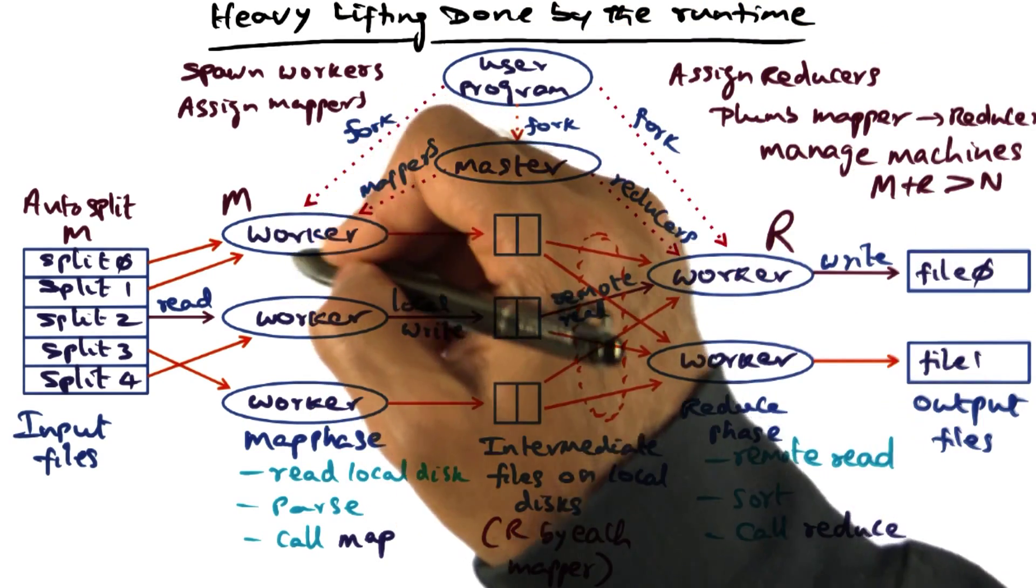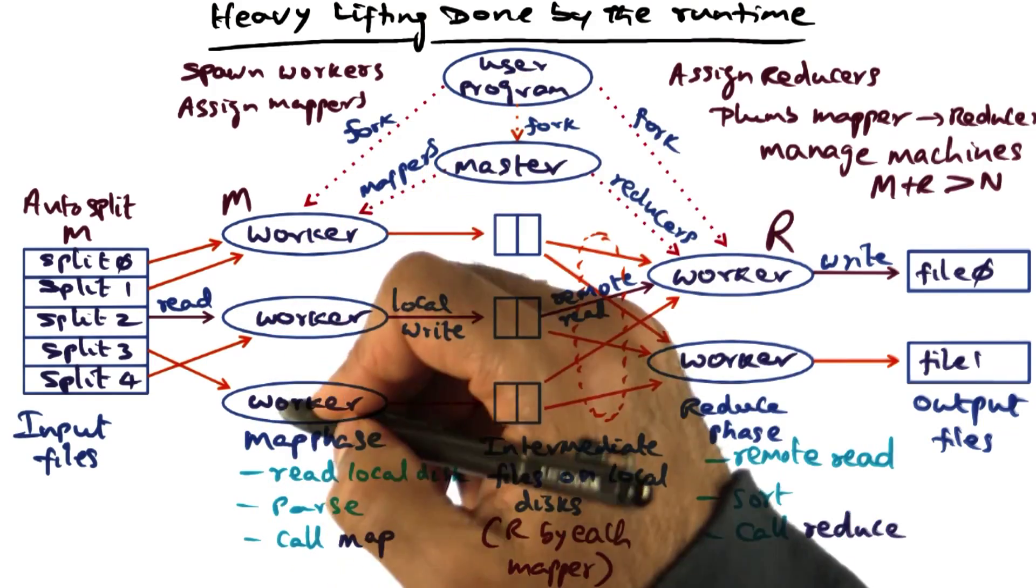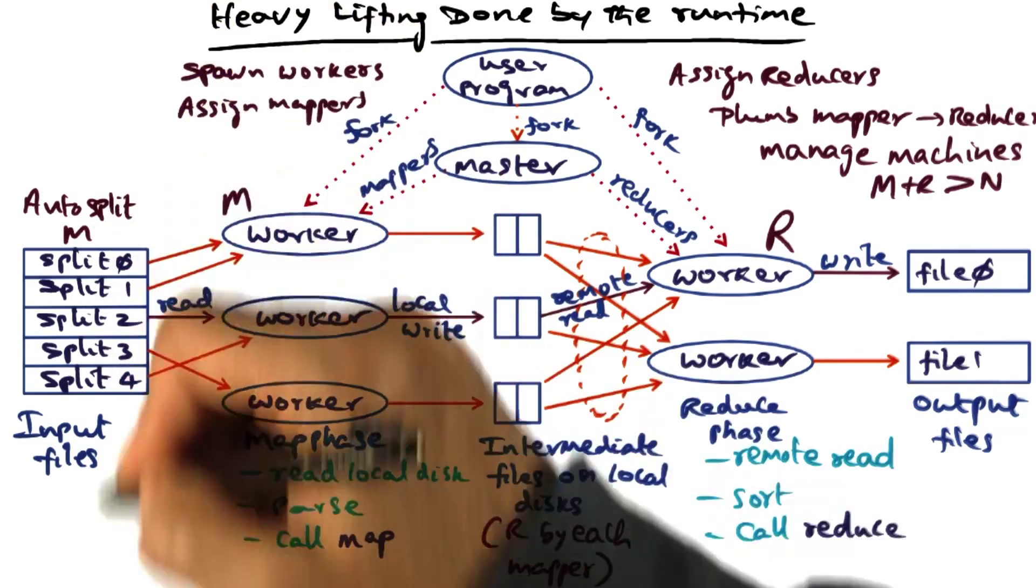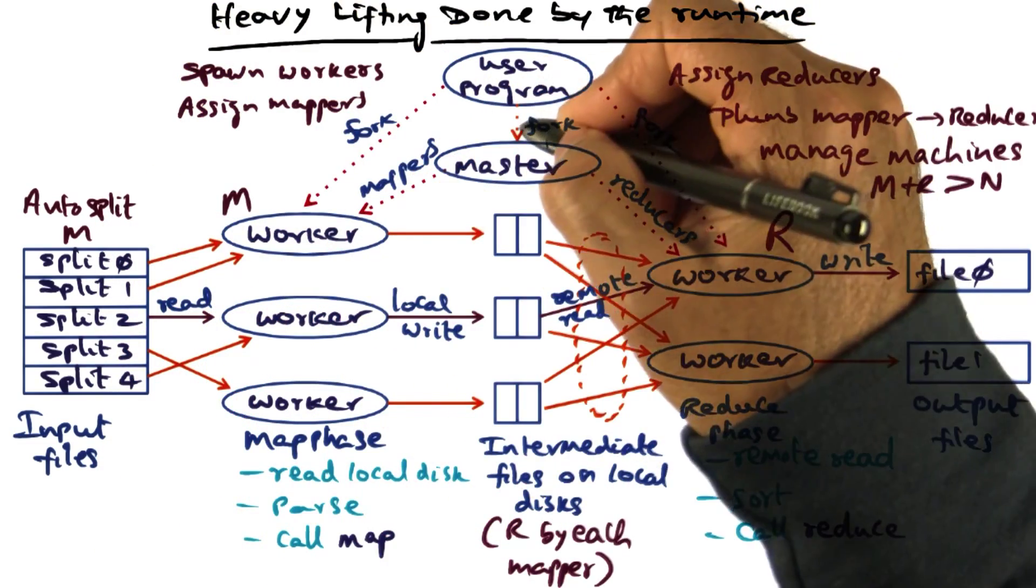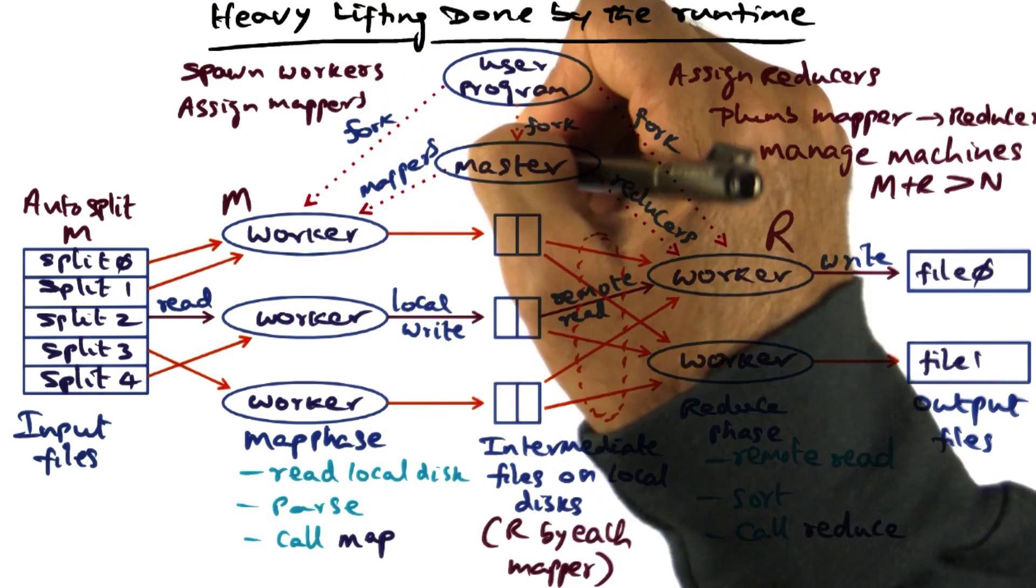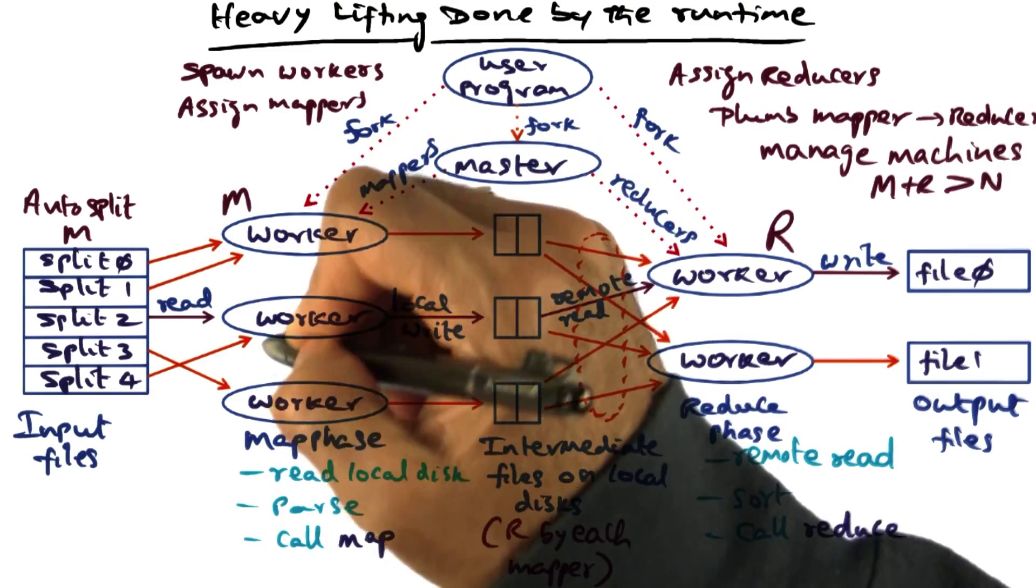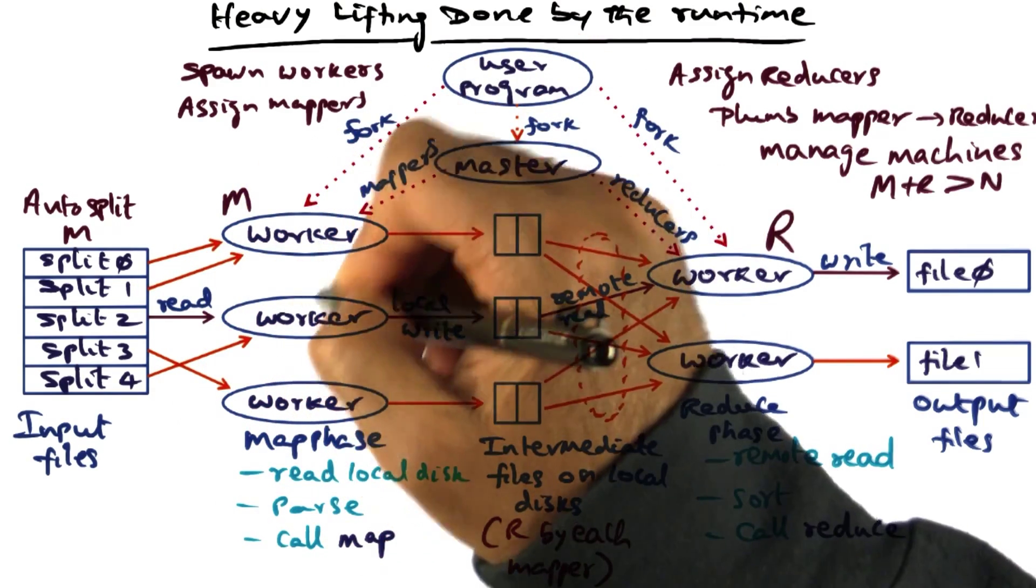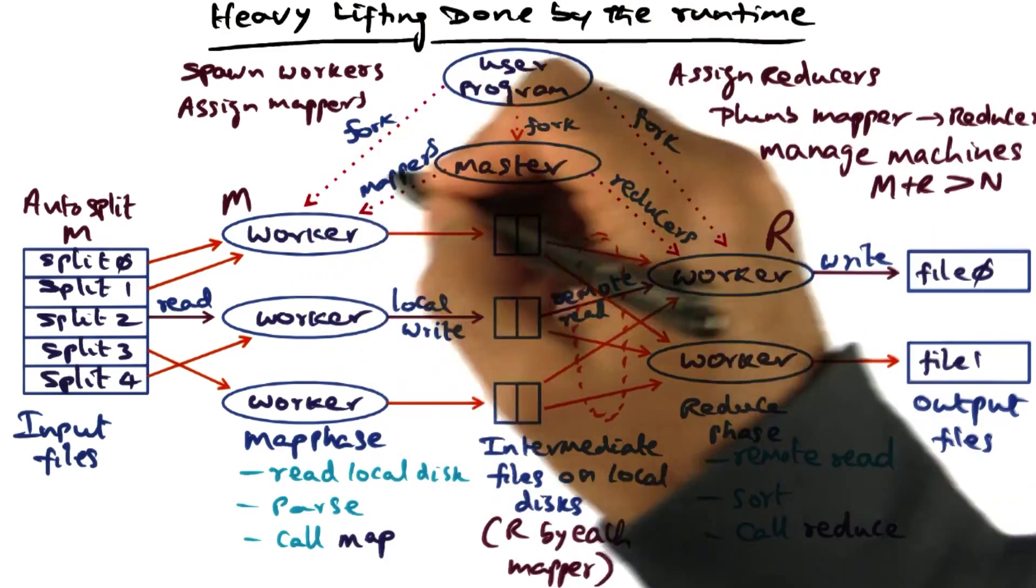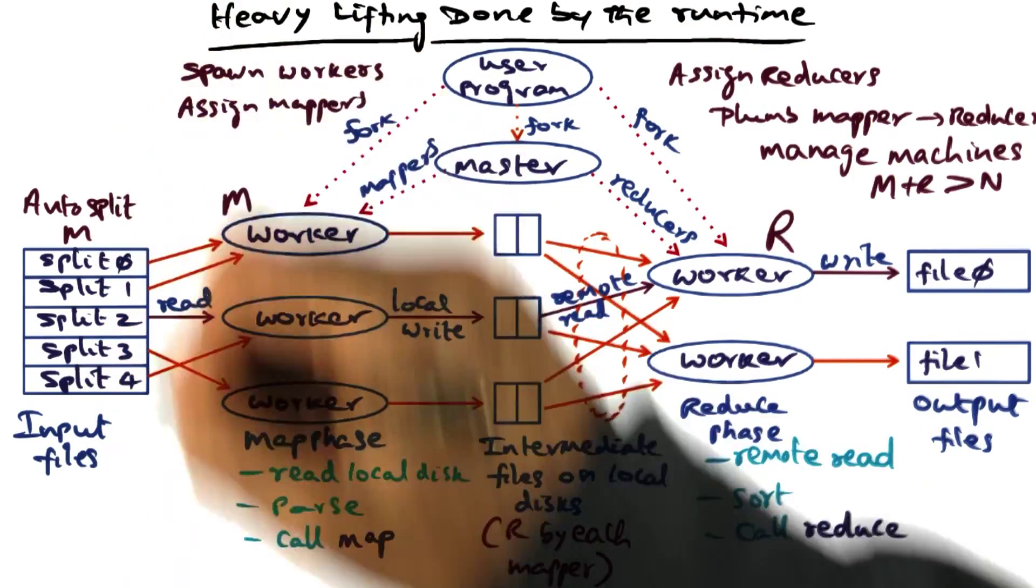So for instance, let's say that I have only 100 worker nodes available as mappers, and I have an input split of a thousand, then what I'm going to do is I'm going to assign one split to this worker, and when the guy says I'm done with it, then I'll say, you're done? Okay, take the next split and work on it. Take the next split and work on it. So that's how we're going to manage the available resources for carrying out the work that needs to be done.